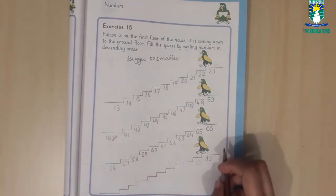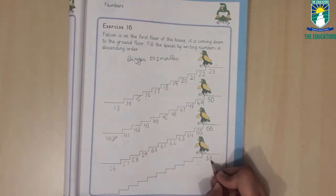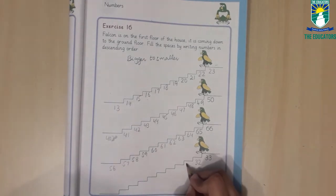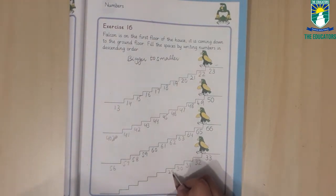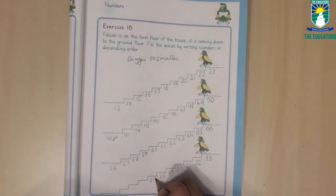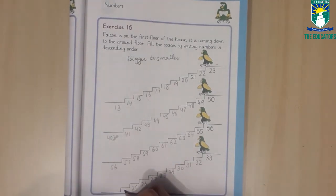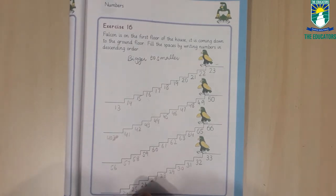Theek hai, ab hum apna last one solve karenge, 33 se start hota aur hamne backward move karna hai. 32, 31, 30, 29, 28, 27, 26, 25, 24, 23. Theek hai, aur hamne downward move kiya hai.